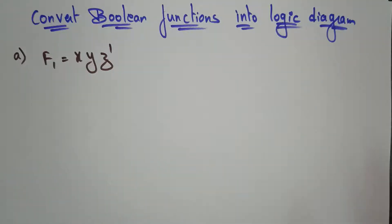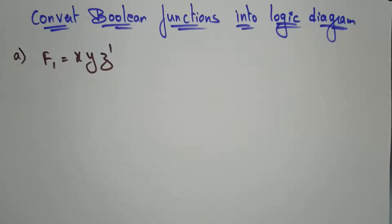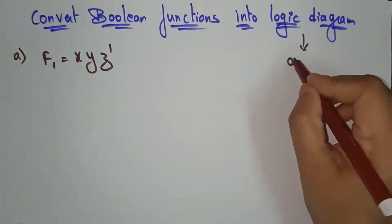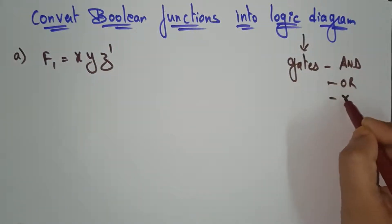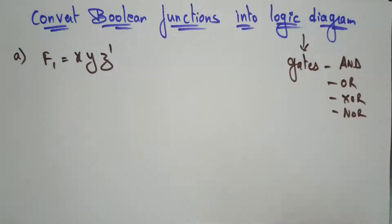Hi students, welcome back. Coming to the next topic in digital logic: how to convert boolean functions into logic diagrams. By the end of this video you will get clarity on how to convert boolean functions into logical diagrams in an easy manner. We know that logical diagrams are constructed using different gates — AND gate, OR gate, XOR gate, NOR gate — and with the help of those gates we construct the logical diagrams.